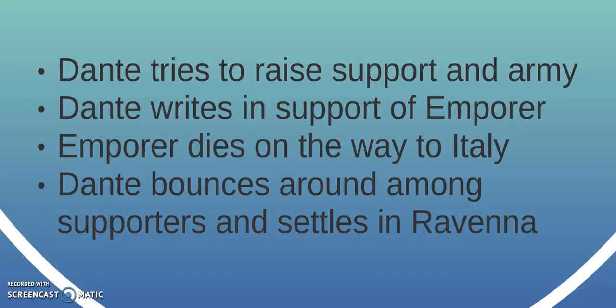Dante tried to raise support and an army, but that didn't work out. He wrote a book in support of the Emperor, and the Emperor was actually on his way to Italy with an army — but unfortunately the Emperor died along the way. After this, Dante bounced around among supporters and eventually settled in Ravenna.